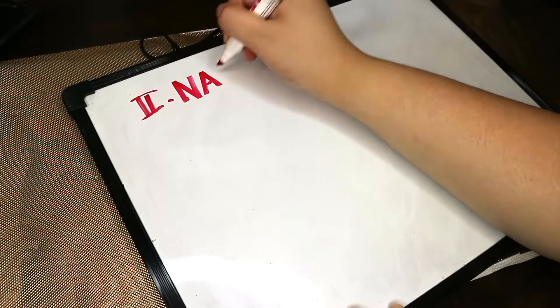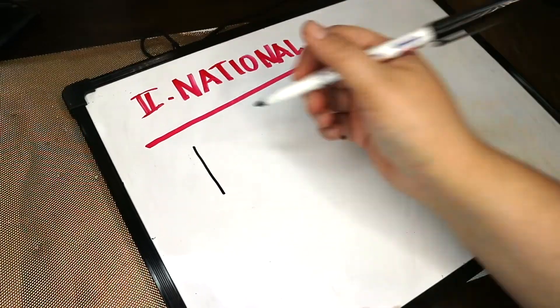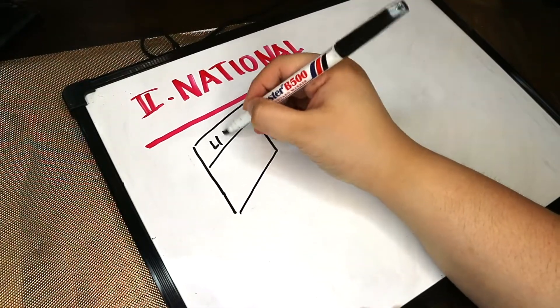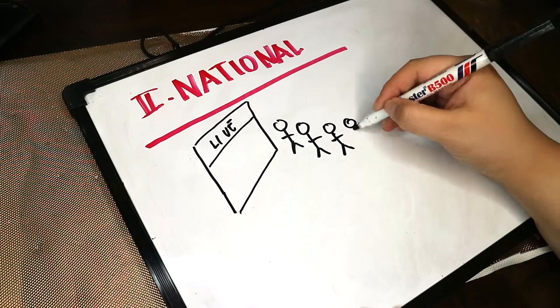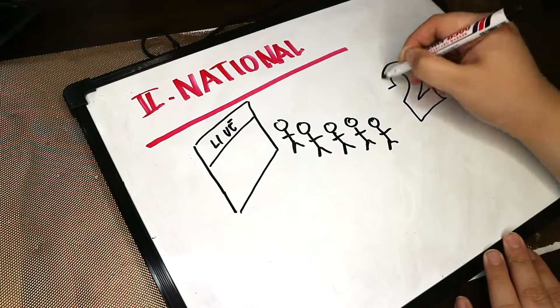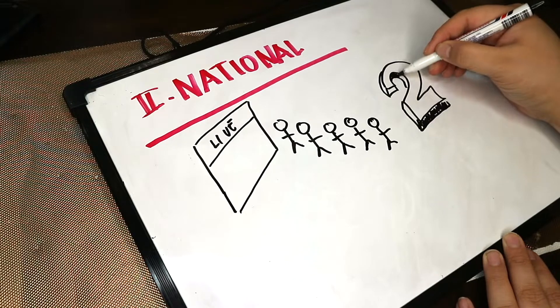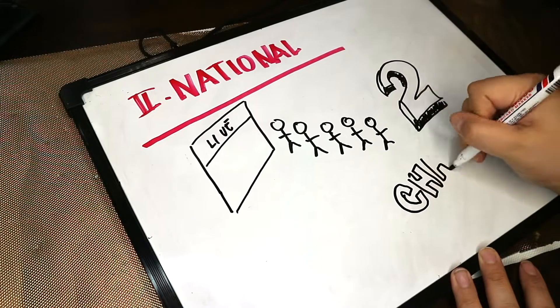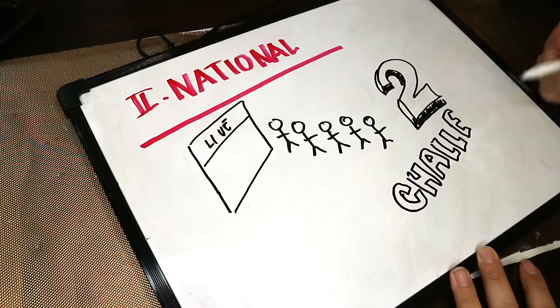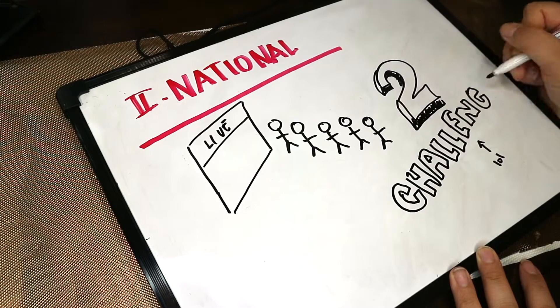Secondly, we have the national round. This is the second part of the competition. Once the top 5 have been chosen, they will be invited for a live competition. There will be two challenges. So be prepared for that. You really need to be ready for a big time. But from what I heard, you don't have to worry. Because it's going to be very fun.